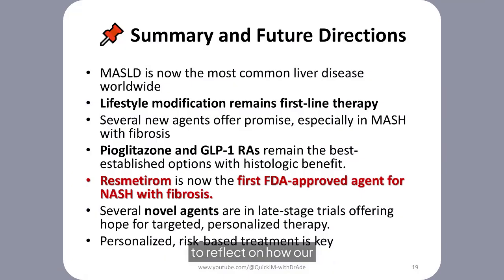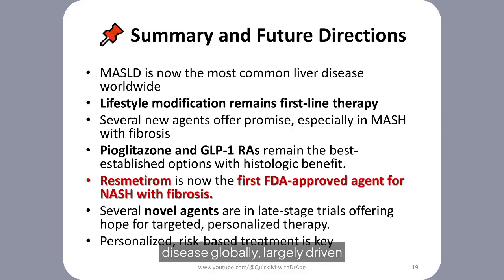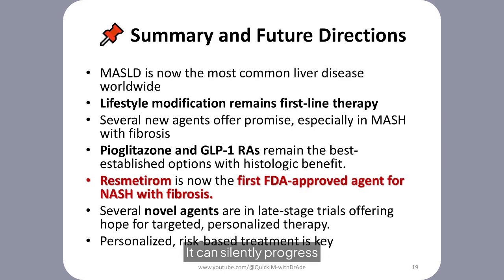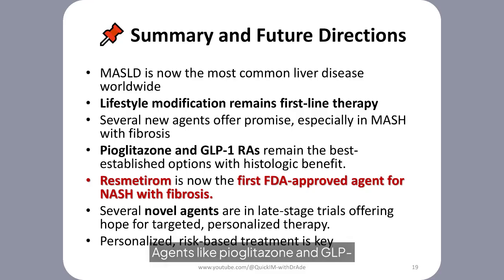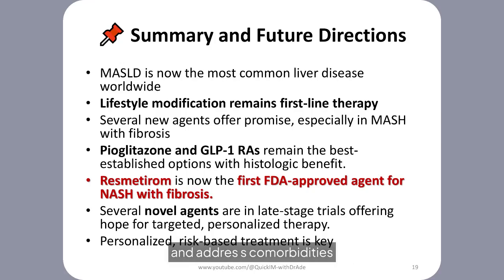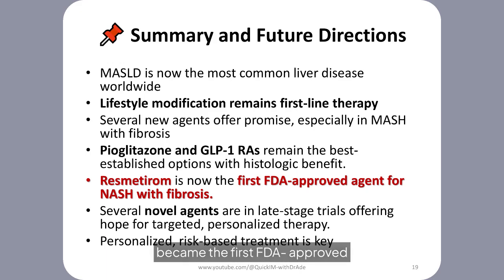MASLD is now recognized as the most prevalent chronic liver disease globally, largely driven by the growing epidemics of obesity, insulin resistance, and sedentary lifestyles. It can silently progress from steatosis to MASH, fibrosis, and cirrhosis, ultimately increasing the risk for hepatocellular carcinoma and cardiovascular death. While lifestyle modification remains the cornerstone of management, emerging pharmacotherapies are ushering in a new era of personalized treatment. Agents like pioglitazone and GLP-1 receptor agonists offer established histological benefits, and resmetirom became the first FDA-approved therapy for NASH with fibrosis, marking a critical milestone.